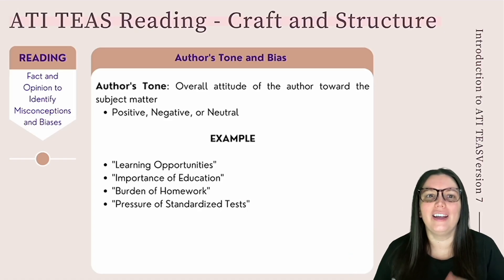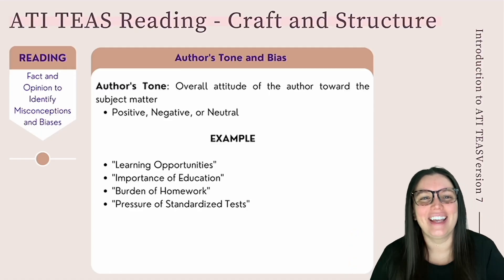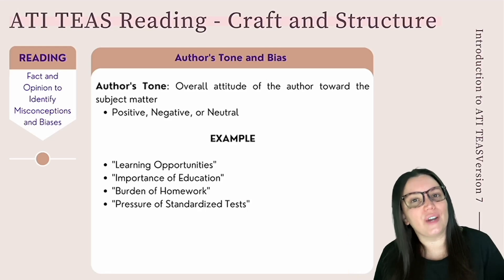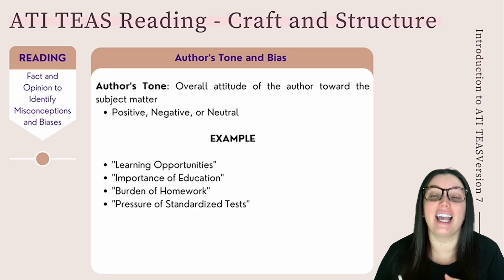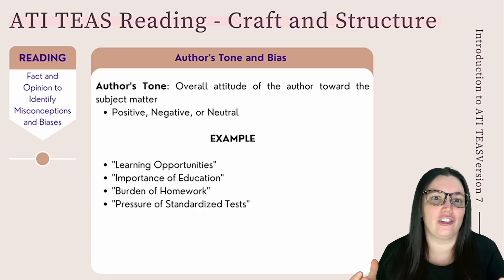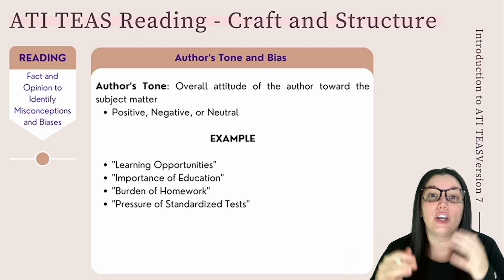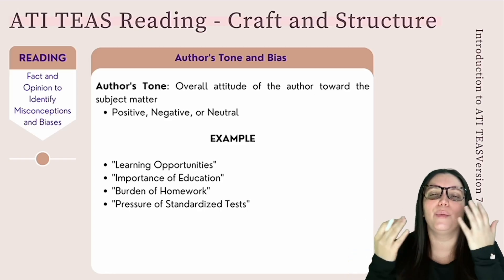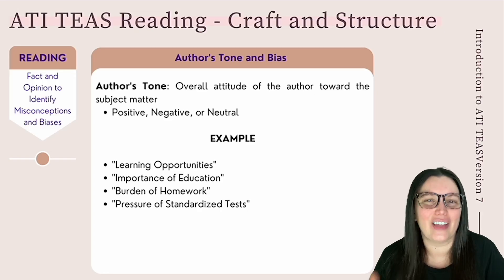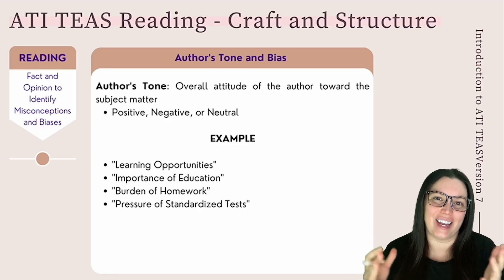For example, an author might have a positive tone towards the subject of education, identifiable through positive words and phrases such as 'learning opportunities' and 'the importance of education.' On the other hand, an author might have a negative tone, identifiable through negative words or phrases such as 'the burden of homework' or 'the pressure of standardized tests.' The key is to identify the author's tone so you can better understand their particular argument.